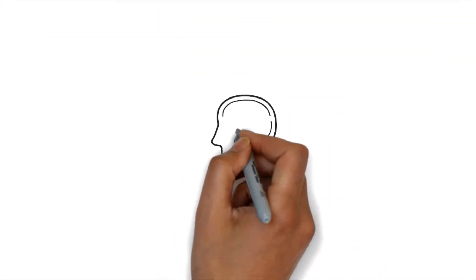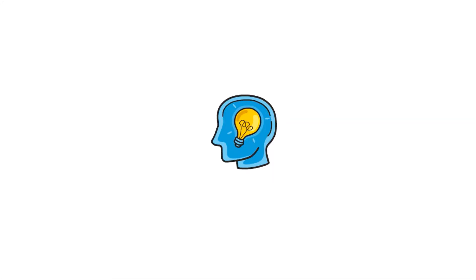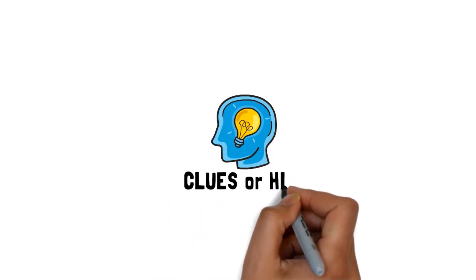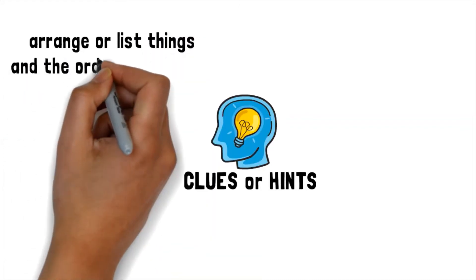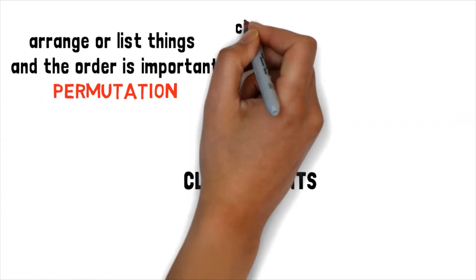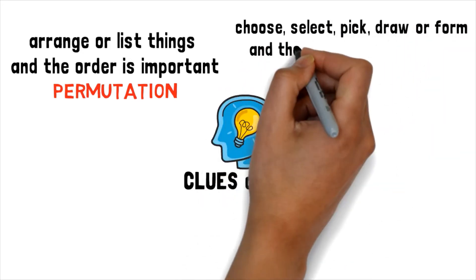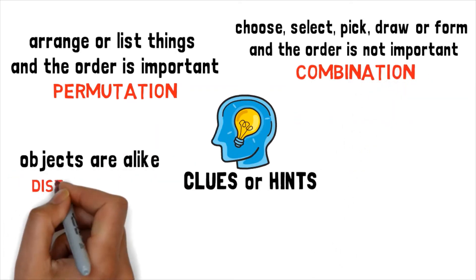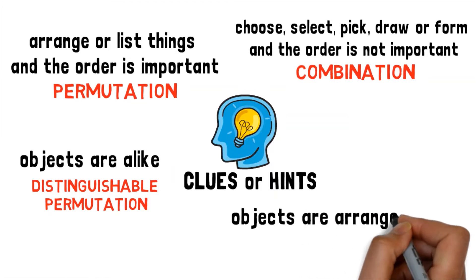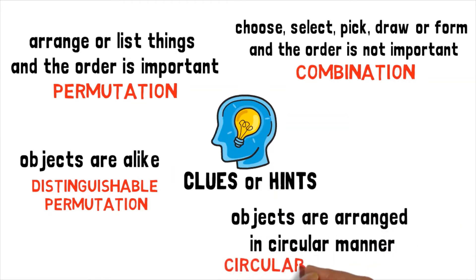When dealing with word problems involving permutation and combination, you must know some clues or hints about what the problem is asking and which formula to use. When you arrange or list things and the order is important, it is a permutation. When you choose, select, pick, draw, or form something and the order is not important, it is a combination. When objects are alike, use distinguishable permutation. When objects are arranged in a circular manner, use circular permutation. These hints are important in deciding the appropriate formula.